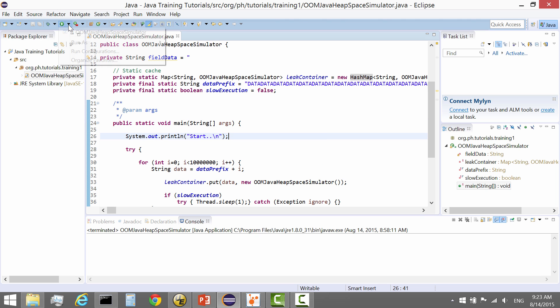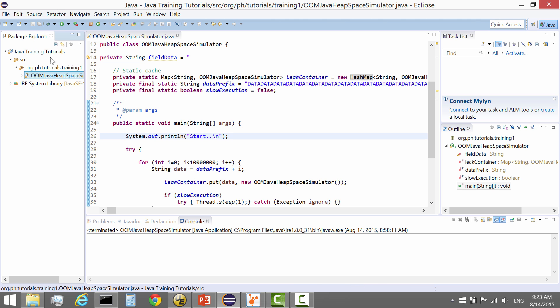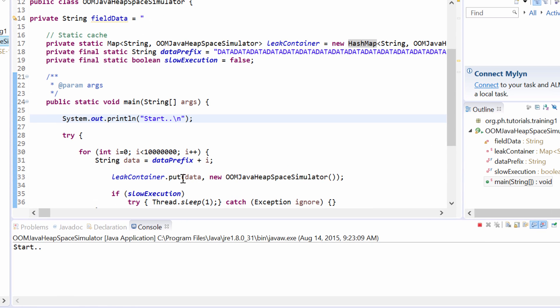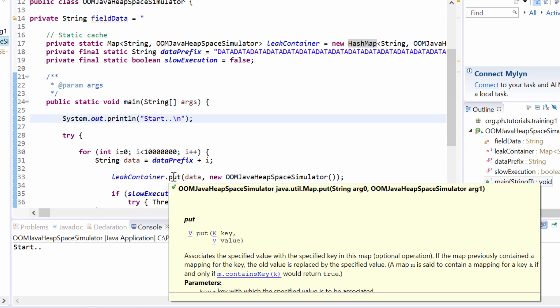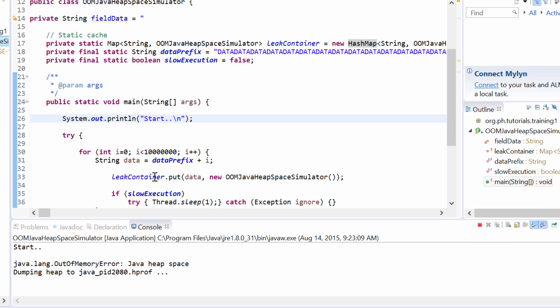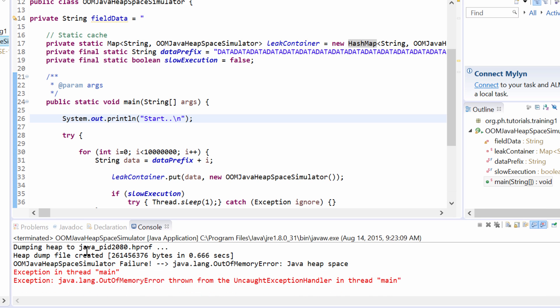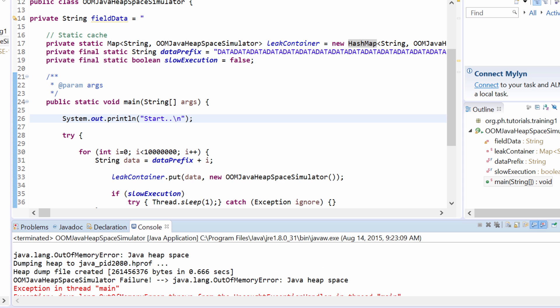Let me start with the execution. I'm going to run the actual program. The program will start accumulating string data in the HashMap until running out of memory. We can see that the program ran out of memory, which is exactly the topic of our discussion. It ran out of memory, and there's a couple of things I want to show you.